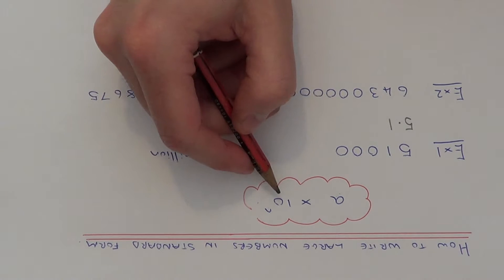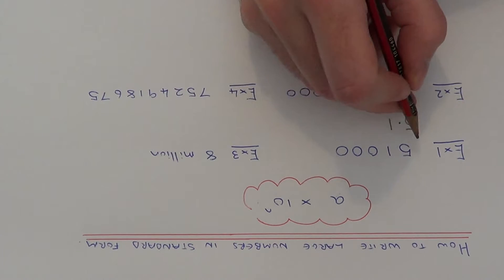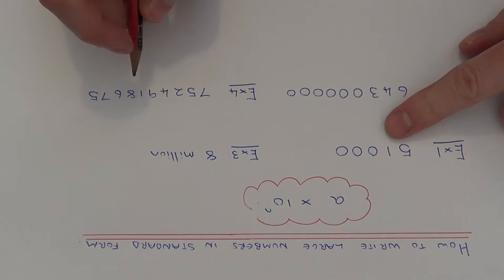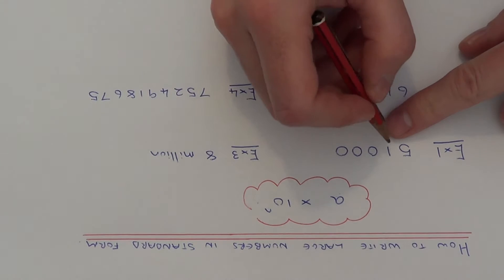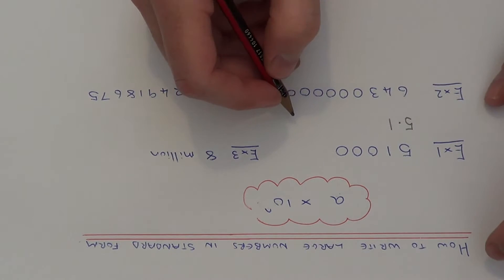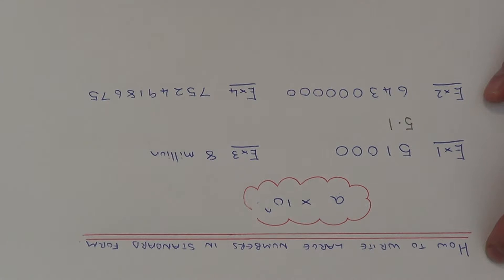The easiest way to do this is just to count how many places you move the decimal point. So let's have a look at example 1. We've got to write down 51,000 in standard index form. First of all, A has to be a number between 1 and 10, so we're going to say it's 5.1. So how many times do we multiply 5.1 by to give us the original number?